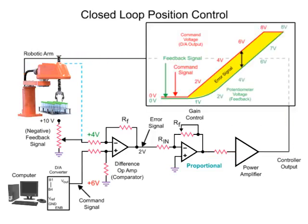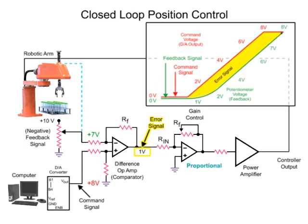The robotic arm moves to the desired position until the error signal at the difference op-amp is zero. When the arm reaches the desired position, the difference op-amp voltage is reduced to zero and the feedback voltage from the potentiometer equals the command voltage of the computer.